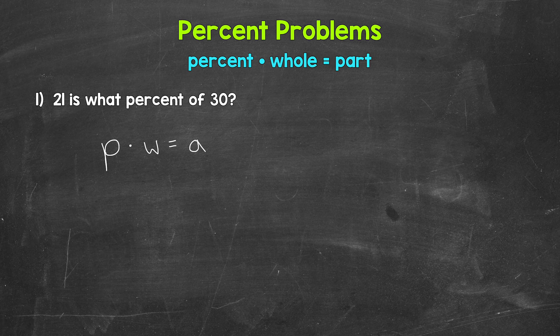As far as identifying the different parts of the equation — figuring out the percent, the whole, and the part from the problem — what I like to do is identify the percent and the whole first by looking for the keyword 'of.' No matter how the problem is worded, look for the percent of the whole. So 'of' is associated with the whole, and 'is' is going to be associated with the part.